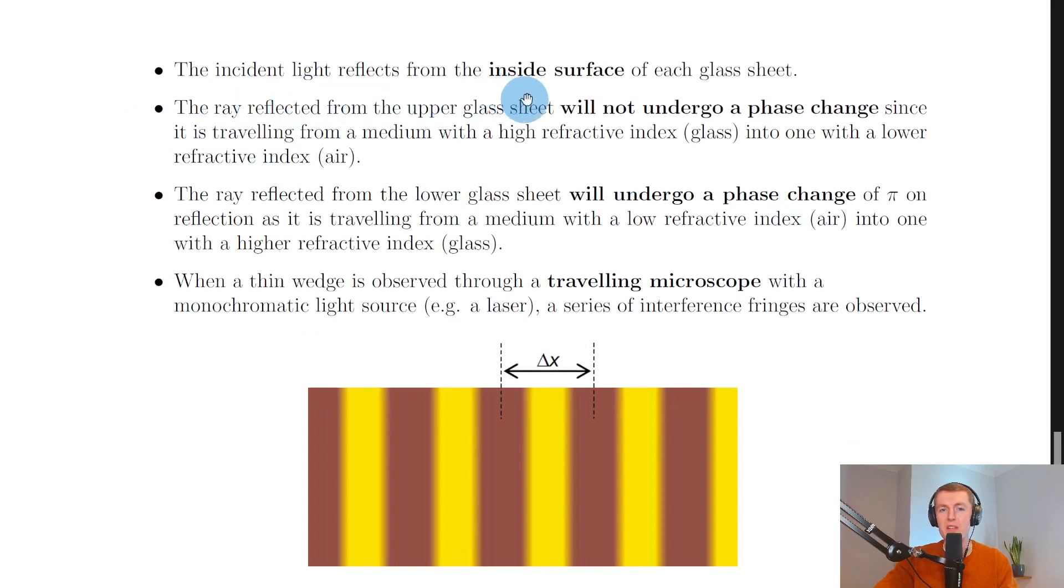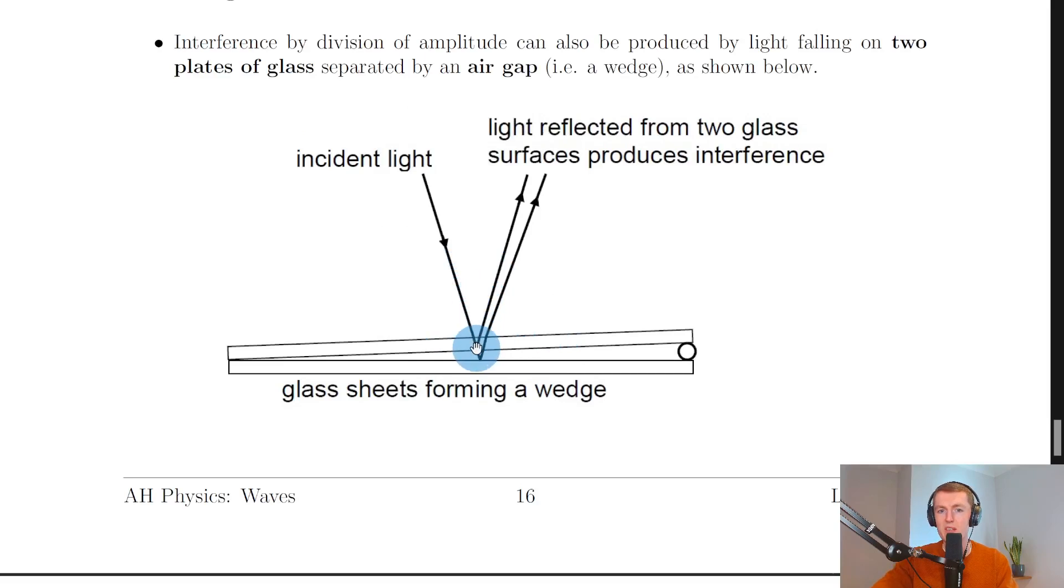The incident light reflects from the inside surface of each glass sheet. The ray reflected from the upper glass sheet will not undergo a phase change since it is traveling from a medium with a high refractive index, i.e. glass, into one with a lower refractive index, i.e. the air. So the light is reflecting from the inside surface of each glass sheet.